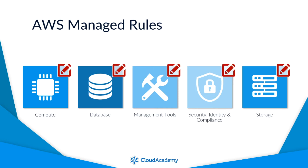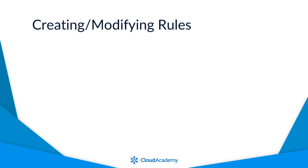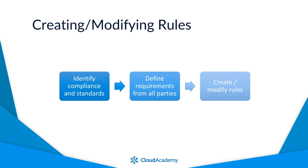Do bear in mind that you can edit specific parameters of Managed rules within these topics, and so if there is a rule that very closely matches your requirements, then you may be able to edit it by selecting different triggers and parameters to reflect the changes that you need. This can save you a lot of time trying to recreate your own from scratch. Before creating, modifying, and configuring your config rules, you should first identify what compliance and standards you need to adhere to. Define the requirements from all parties, but remember there is a limit of 50 config rules per region before you need to contact AWS to request an increase.